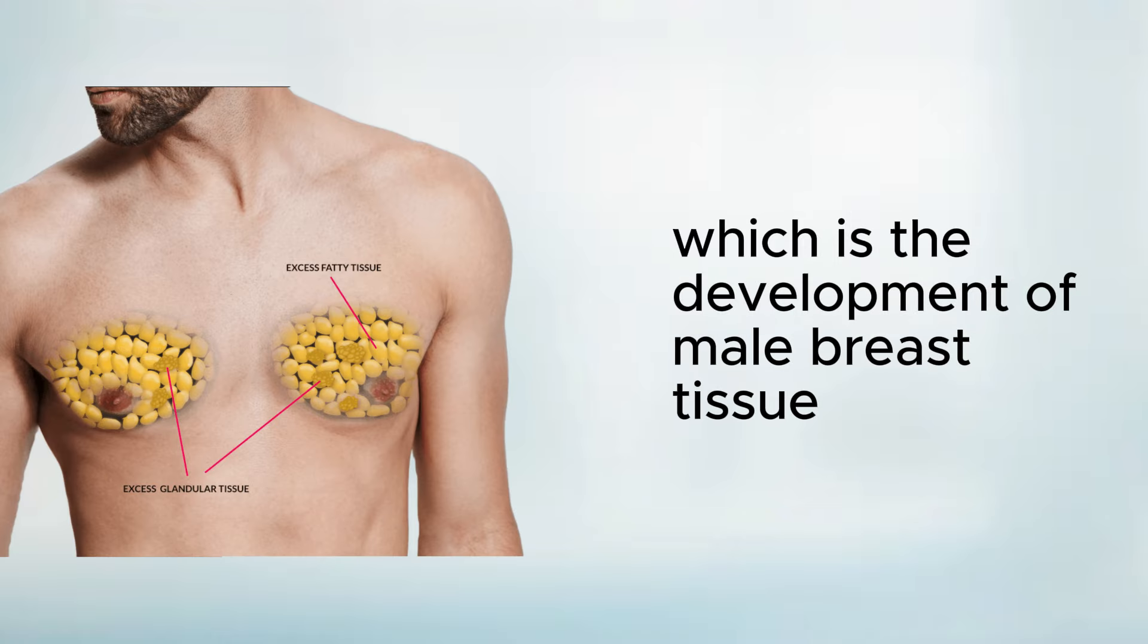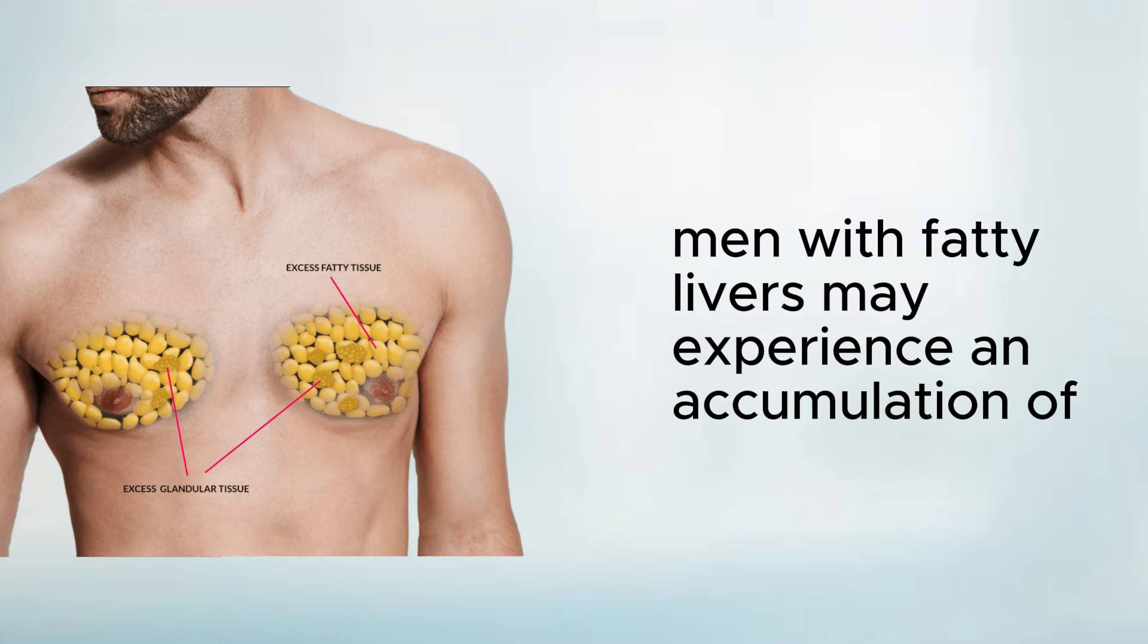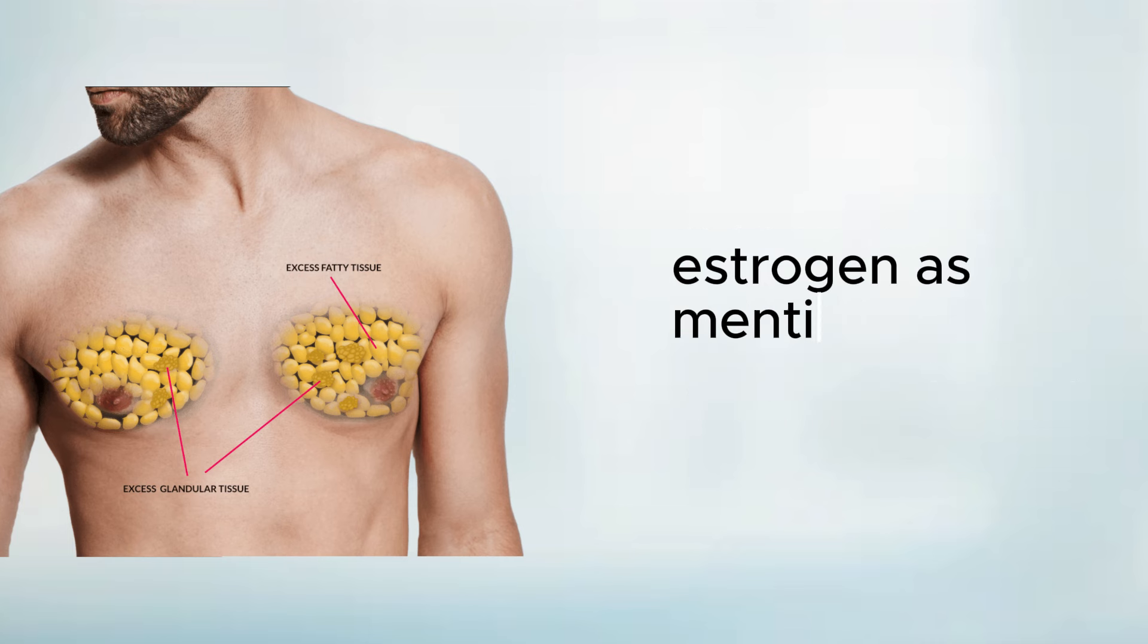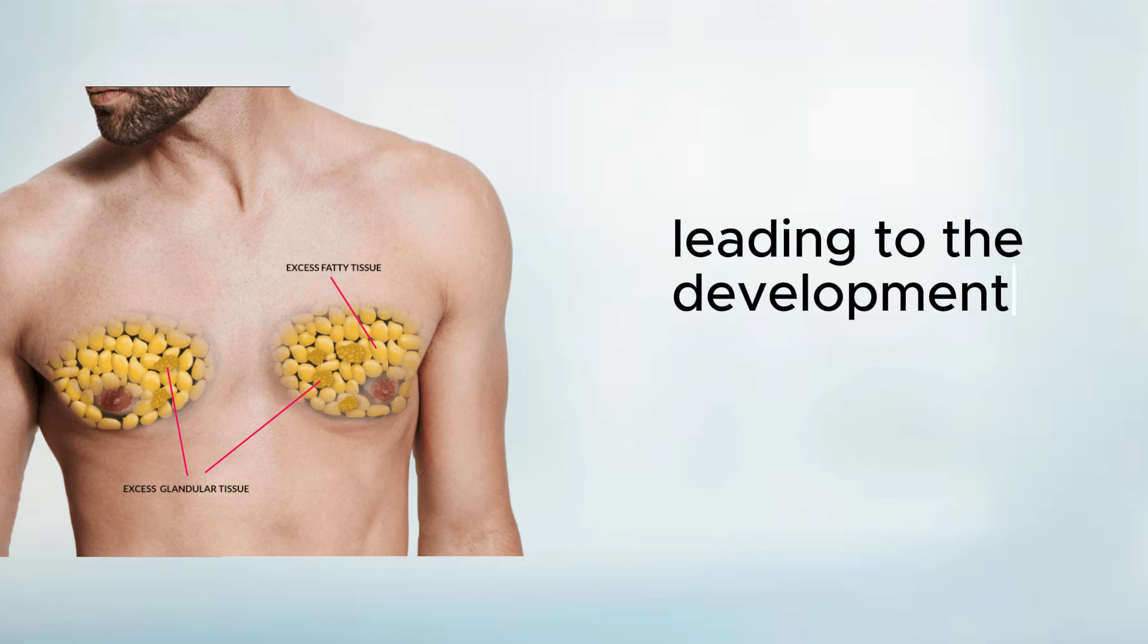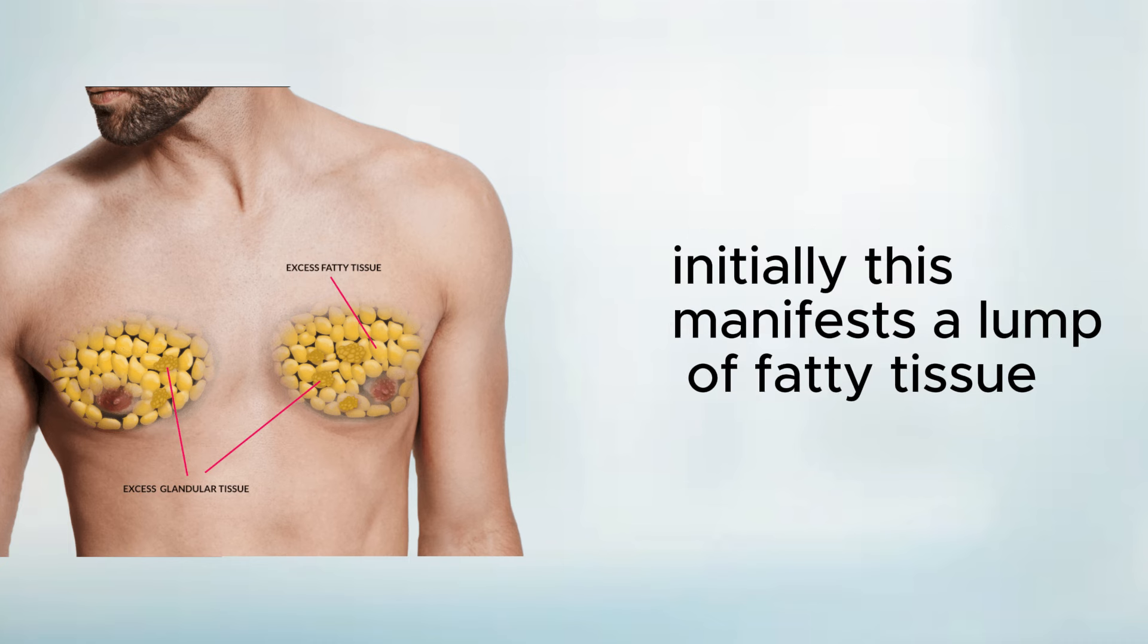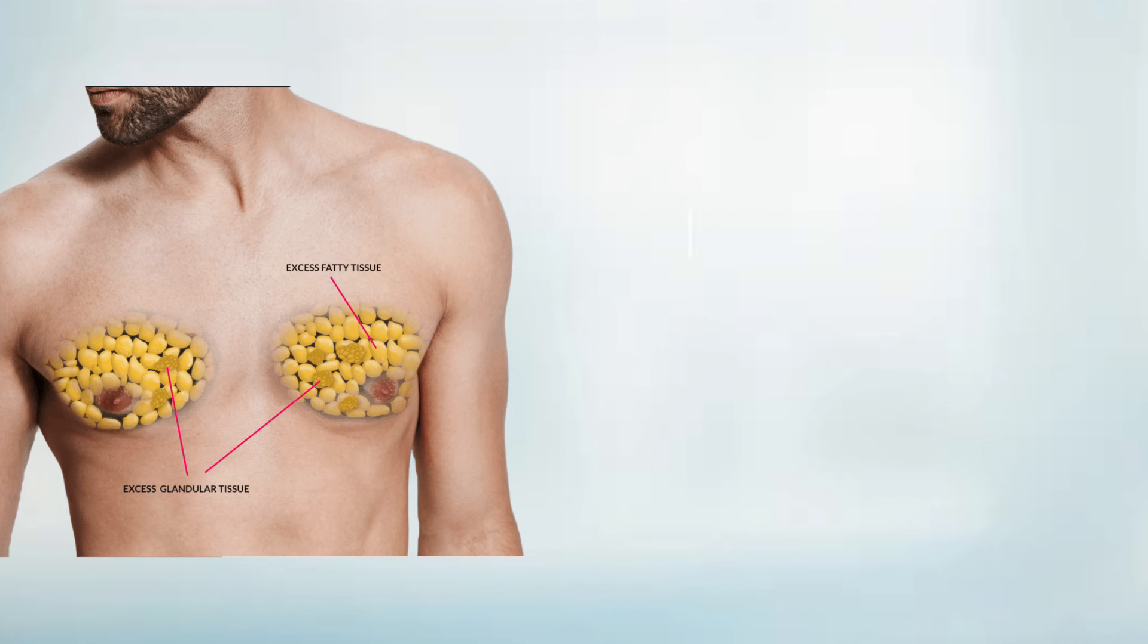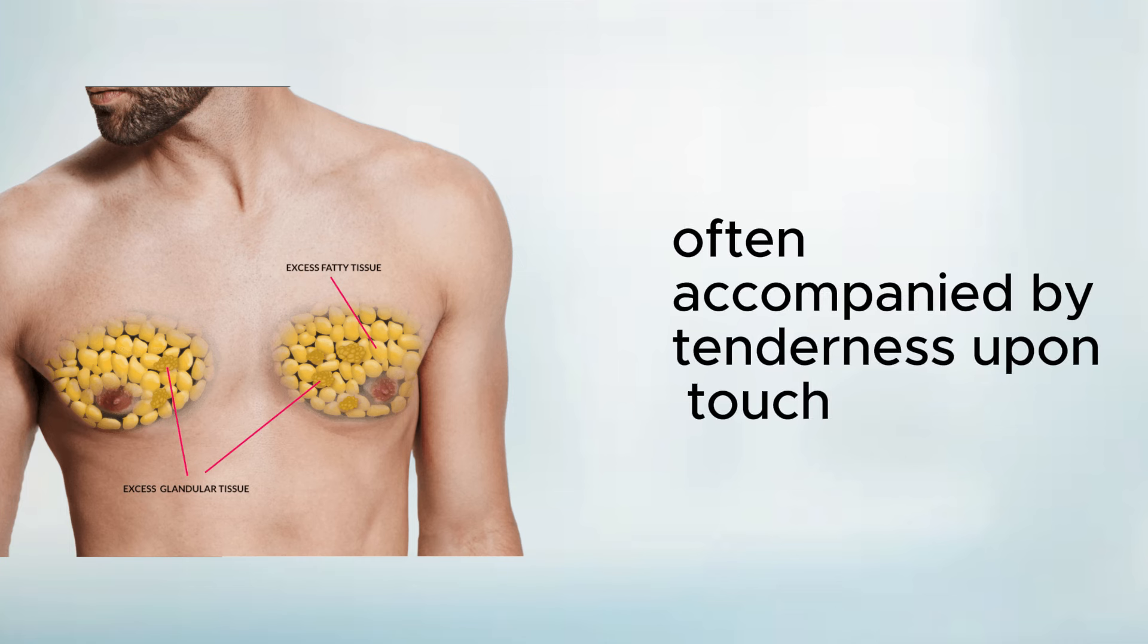Sign number four is the development of male breast tissue. Men with fatty livers may experience an accumulation of estrogen, as mentioned earlier, leading to the development of female breast tissue. Initially, this manifests as a lump of fatty tissue just beneath the nipple, often accompanied by tenderness upon touch.